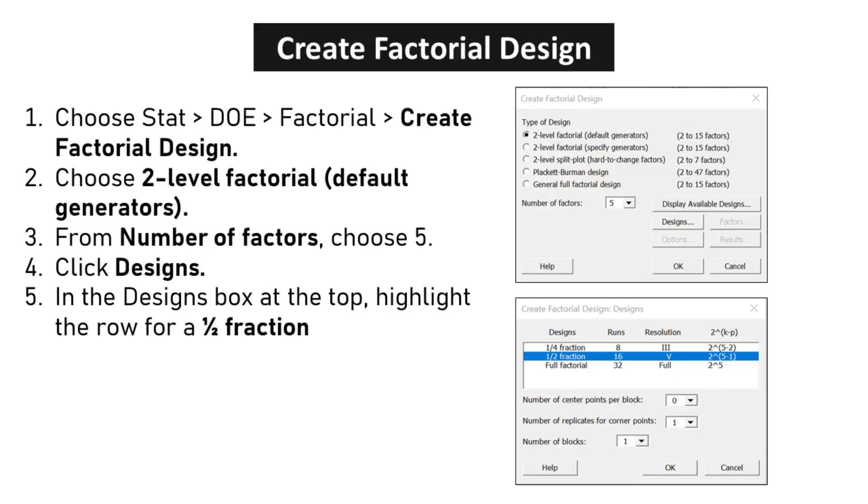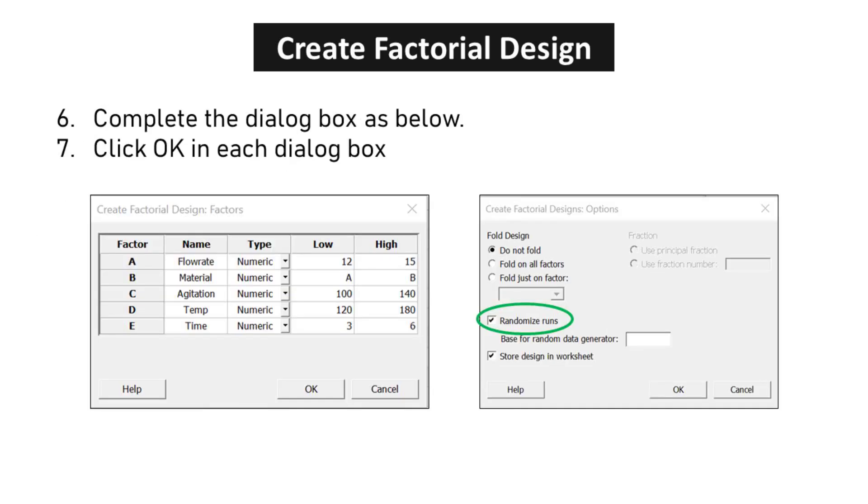Choose STAT, DOE, Factorial, Create Factorial Design. Choose 2-level factorial, default generators, from number of factors choose 5. Click Designs. In the Designs box at the top, highlight the row for a half-fraction. Complete the dialog box as below.